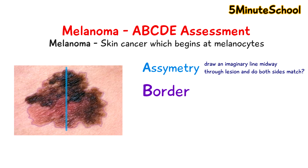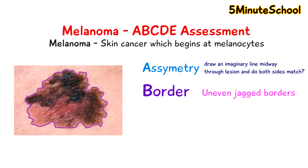The second letter is B, which stands for border. Is the border of this lesion well defined? Can you see it clearly, or is it uneven, notched or jagged? Melanomas tend to have uneven borders like this, whereas benign skin lesions are usually with smoother, even borders. A benign skin lesion is not a form of cancer.